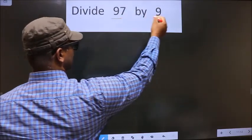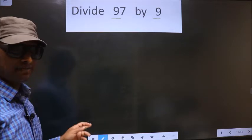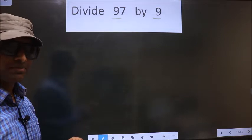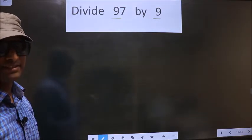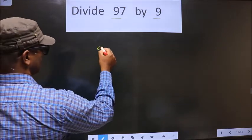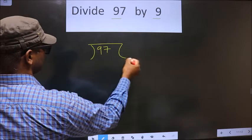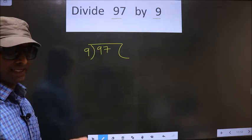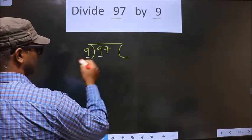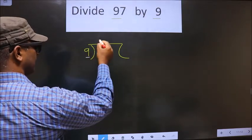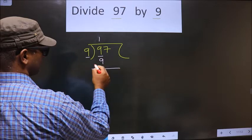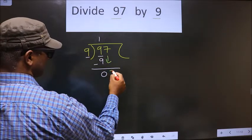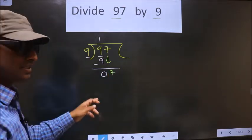Let's divide 97 by 9. While doing this, many people make a mistake — I will tell you what that mistake is. First, we should frame it this way: here we have 97 divided by 9. In the 9 times table, 9 once is 9. You subtract and get 0, then bring the number 7 down.